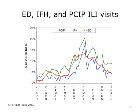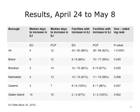A graph shows ILI levels at emergency departments in red, PCIP primary care practices in green, and IFH primary care practices in blue. EDs increased well above their baseline around April 28, whereas IFH didn't increase above baseline until after May 19, and PCIP facilities didn't show a major increase until mid-May. In the first phase (April 24–May 8), most EDs — 86% — experienced significant increases in ILI almost immediately, whereas the increase at ambulatory care facilities occurred in fewer sites (62%) and was more gradual. The median days to increase at EDs was 4 days — that is, 50% of EDs experienced an increase within 4 days of April 24th.